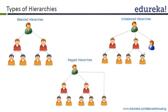In an unbalanced hierarchy, on the other hand, not all parents have the same number of children. In the diagram, the blue-colored parent at the second level doesn't have any children. These are hierarchies where the number of children for each parent is not balanced across different levels.